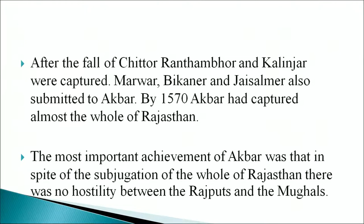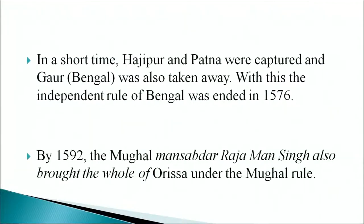Akbar's campaign against the Afghans started with Gujarat in 1572. One of the princes, Itimad Khan, had invited Akbar to come and conquer it. Bengal and Bihar, which were under the control of the Afghans, were given attention after the Gujarat expedition in 1574. Akbar, along with Munim Khan Khan-i-Khanan, marched towards Bihar. In a short time, Hajipur and Patna were captured, and Gaur in Bengal was also taken. With this, the independent rule of Bengal was ended in 1576. By 1592, the Mughal mansabdar Raja Man Singh brought the whole of Orissa under Mughal rule.